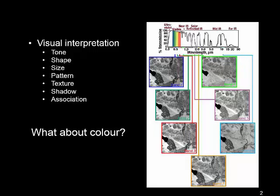Image visualisation is an important step in image interpretation. There's a lot we can learn about imagery from a simple visual interpretation, and this relies on things like the different tones within the imagery, the shape of objects, the size and pattern and association between objects. Textures and shadows within the image are also important in interpreting what the image consists of, how different objects relate to each other, and how they change over time.